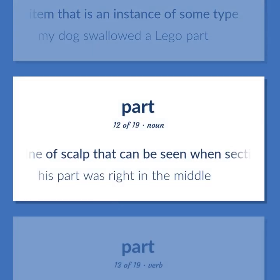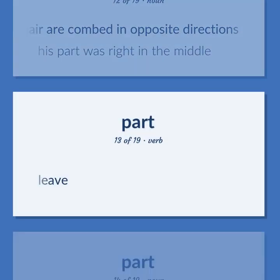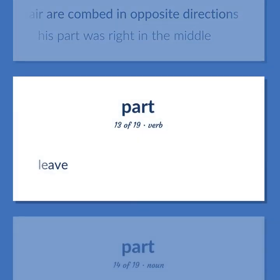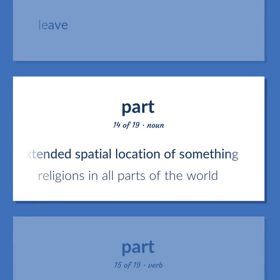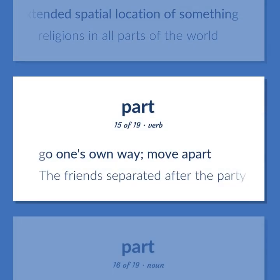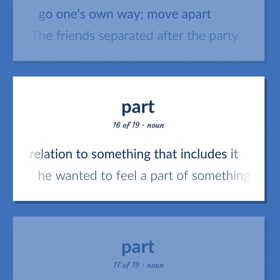Part: a line of scalp that can be seen when sections of hair are combed in opposite directions. Example: His part was right in the middle. Part (verb): leave. The extended spatial location of something. Example: Religions in all parts of the world. Go one's own way; move apart. Example: The friends separated after the party. Something determined in relation to something that includes it. Example: He wanted to feel a part of something bigger than himself.